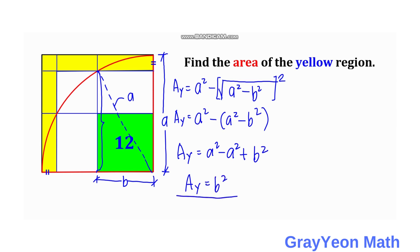But B squared is actually the area of the green triangle with a side B. So area of the yellow is equal to B squared which is 12 square units. And that is our answer.